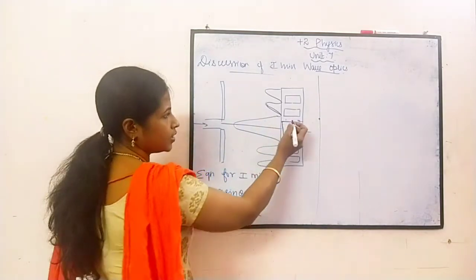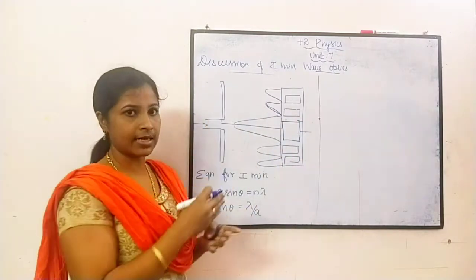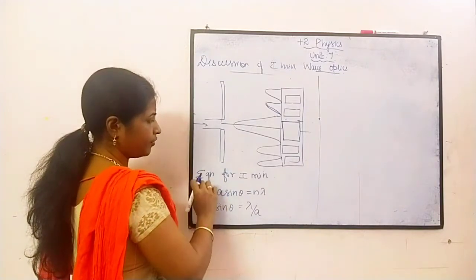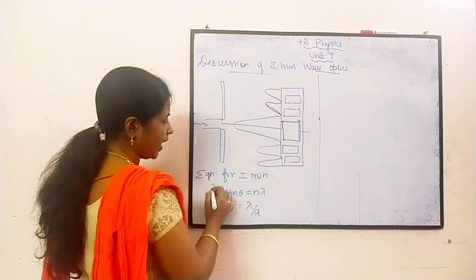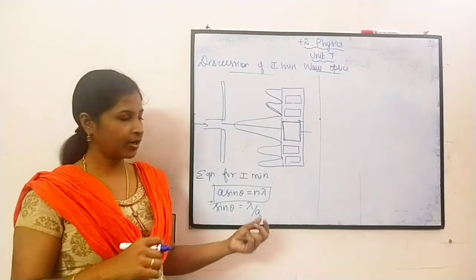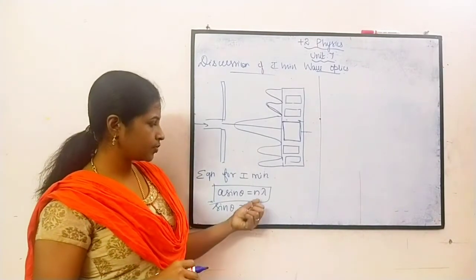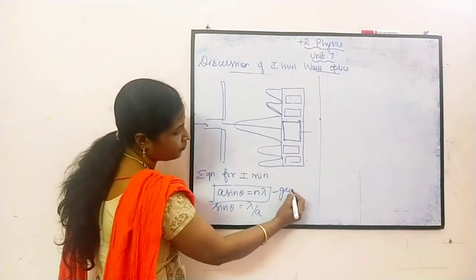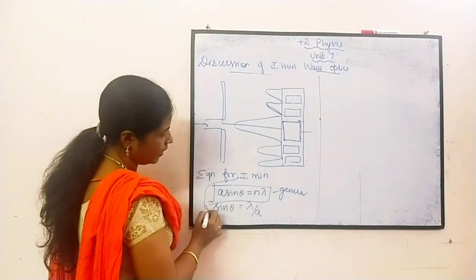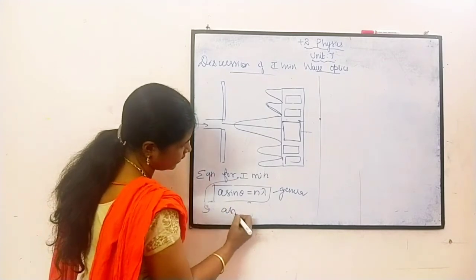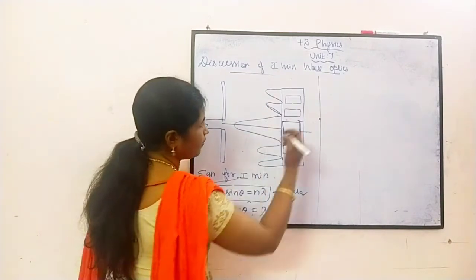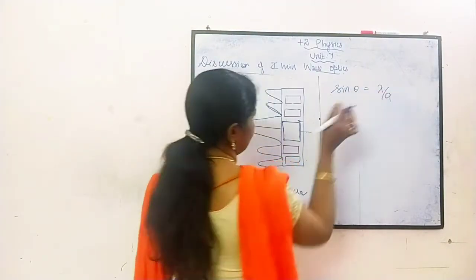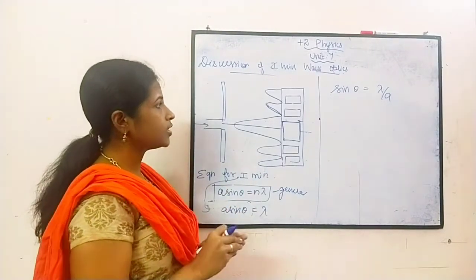Now we are going to discuss the reason for the first minimum — that is, on both sides of the central maxima. As we already derived, the equation for the first minimum is A sin θ = Nλ. This is the general expression. If it is the first minimum, N becomes 1, so I can write it as A sin θ = λ, and from that, sin θ = λ/A.